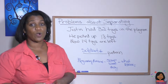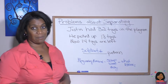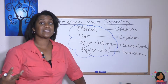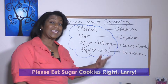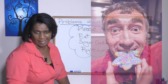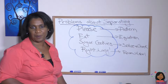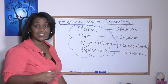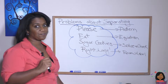Let me give you a few examples of how to do word problems with a subtraction pattern. Let's review our device to help us attack word problems: Please Eat Sugar Cookies — because Larry is eating those cookies the wrong way. Let's take a look at our first problem. My box had 159 pieces of popcorn. I shared with my friends. Now there's 47 pieces of popcorn left. How many pieces did we eat? Let's apply our surefire method.